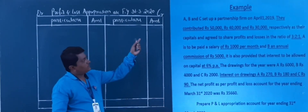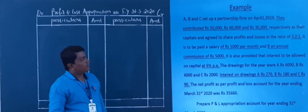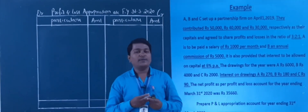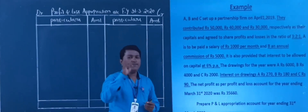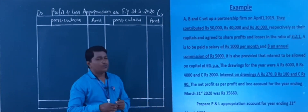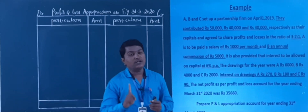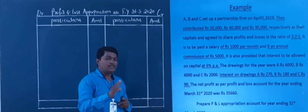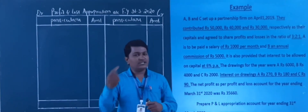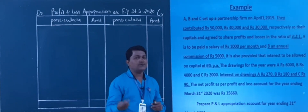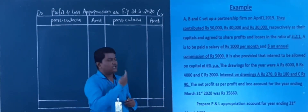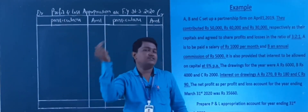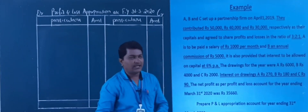First of all, I analyze the problem. Please read here. A, B and C set up a partnership firm on April 1st, 2019. How many partners are there? Three partners: A, B and C. They contribute Rs. 50,000, Rs. 40,000 and Rs. 30,000 respectively as their capital. First name comes with first amount, second with second, third with third — whenever you find the word 'respectively'.